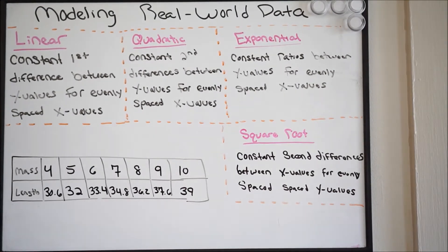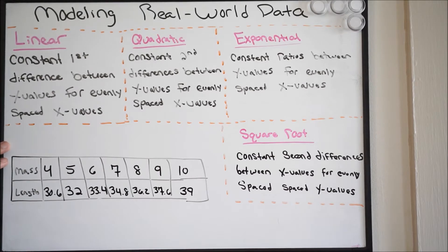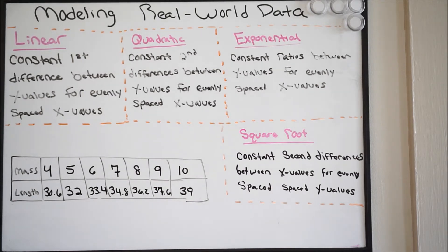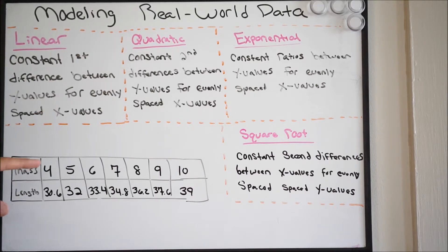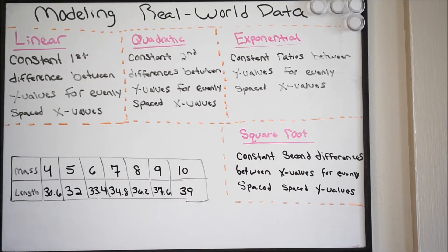We're going to get right into it. Notice I have a table here — I have mass and length, mass being my x and length being my y. We'll start with linear to see if that checks out, and if it doesn't, we'll just keep moving down. For linear, it has a constant first difference between y values for evenly spaced x values. Notice here we have evenly spaced x values.